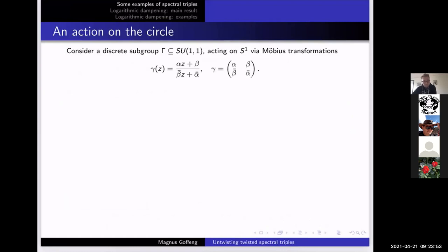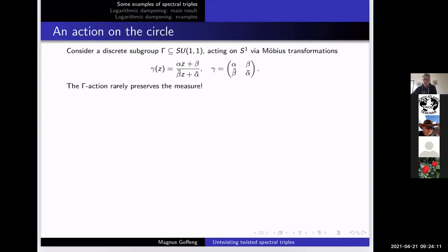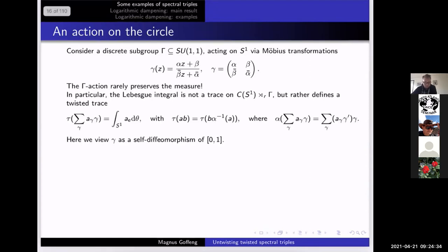Again on the circle, but now we involve a discrete subgroup of SU(1,1) — you can also do SL(2,R) because it's the same. SU(1,1) acts by Möbius transformations on the circle. It's a potentially wild action; it rarely preserves the measure. There are very few elements of SU(1,1) that preserve the measure. If it were to play nicely with the spectral triple, we know from Connes' construction that it should actually preserve the measure. What we do have more precisely is that the Lebesgue integral does not induce a trace on the cross product, but it defines a twisted trace. So if we lift the Lebesgue integral to a state on the cross product, it has a twisted tracial property with respect to an automorphism of a dense subalgebra.